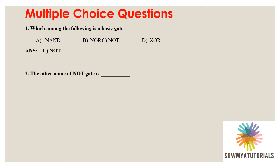Second question: the other name of NOT gate is what? Options: neglect gate, inverter gate, exclusive OR gate, exclusive NOR gate. The correct answer is option B, inverter gate. The NOT gate we can also call as an inverter gate.